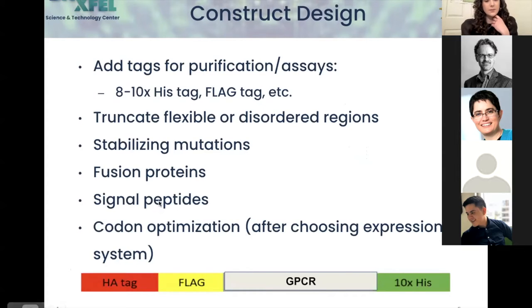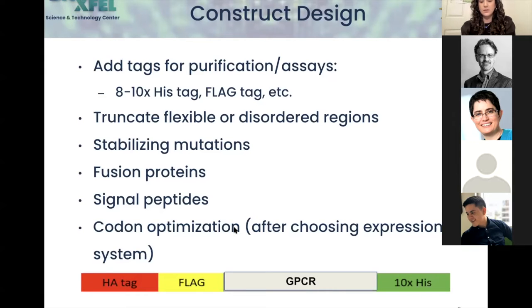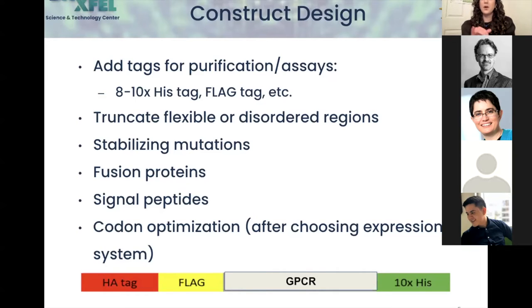Other things include the signal peptide, which you might add at the beginning — for GPCRs, it ensures your protein is shuttled from the ER all the way to the membranes, so it won't crash out or get stuck in the process. Then there's codon optimization: after picking your expression system, you may need to send the sequence to a company to have it codon-optimized if it's being expressed in a different organism. For example, if you're using a human protein and expressing it in insect cells, the codon usage will differ, so optimization helps improve expression.